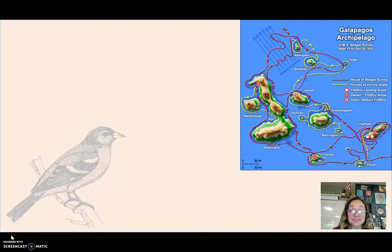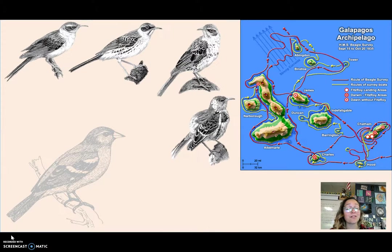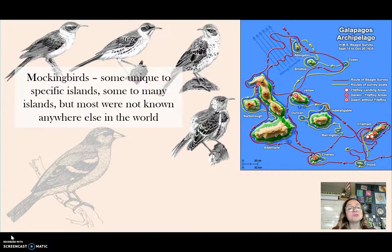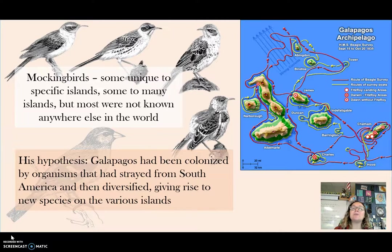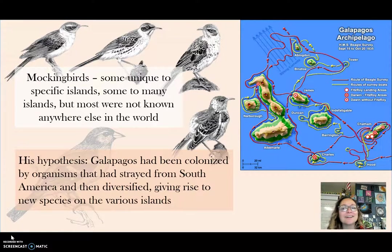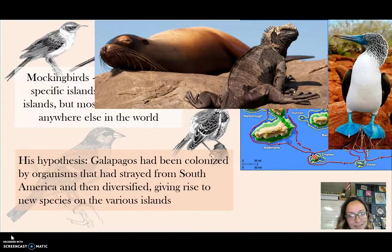Then he visited the Galapagos, a series of islands right around the equator. He studied the mockingbirds on the different Galapagos islands — some were unique to specific islands, some to many islands, and most were not known anywhere else in the world. His hypothesis was that the Galapagos had been colonized by organisms that had strayed from South America and then diversified, giving rise to new species on various islands. Since each island has its own specific habitat, different traits would be selected for. The Galapagos are home to a bunch of unique animals found only there, making it a hotspot for biodiversity and study.